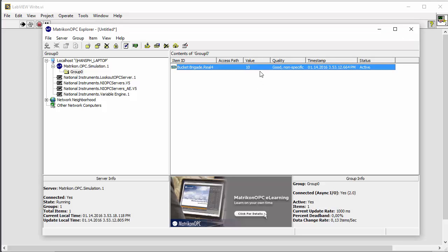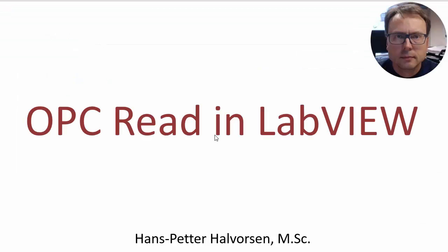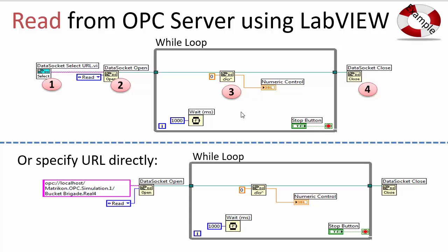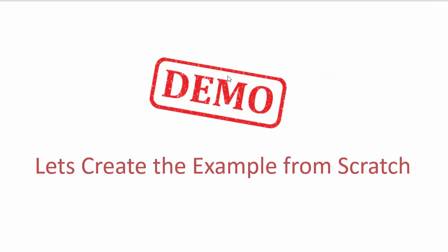Next, we want to read values from the OPC server using LabVIEW. We want to create application number two, where we read the values we just wrote to the OPC server from LabVIEW application number one. Here are some examples of how to do it — it's almost identical to the previous example, but instead of write we use the data socket read.